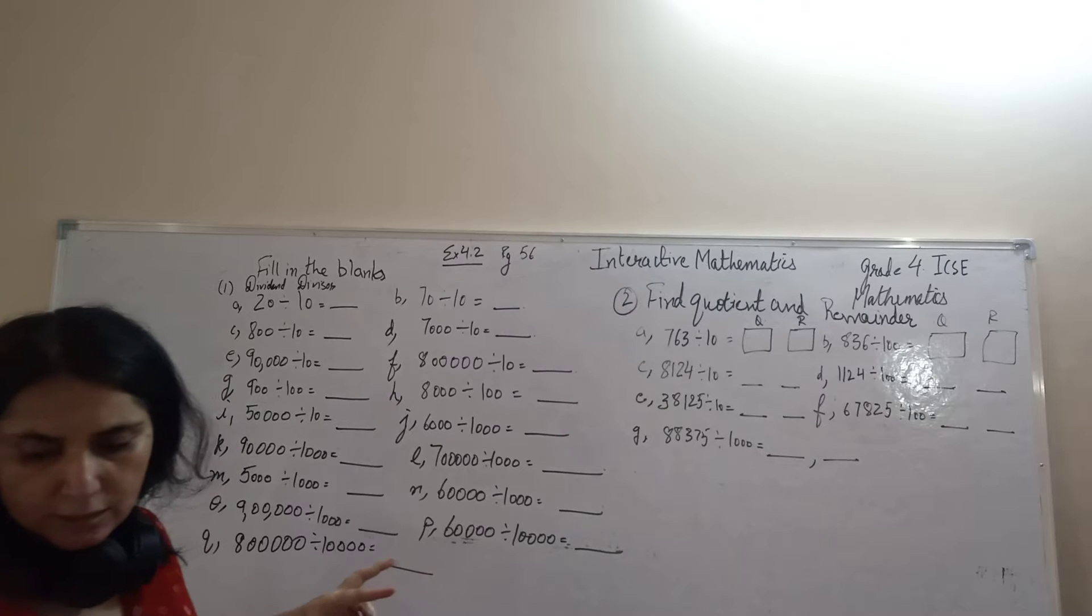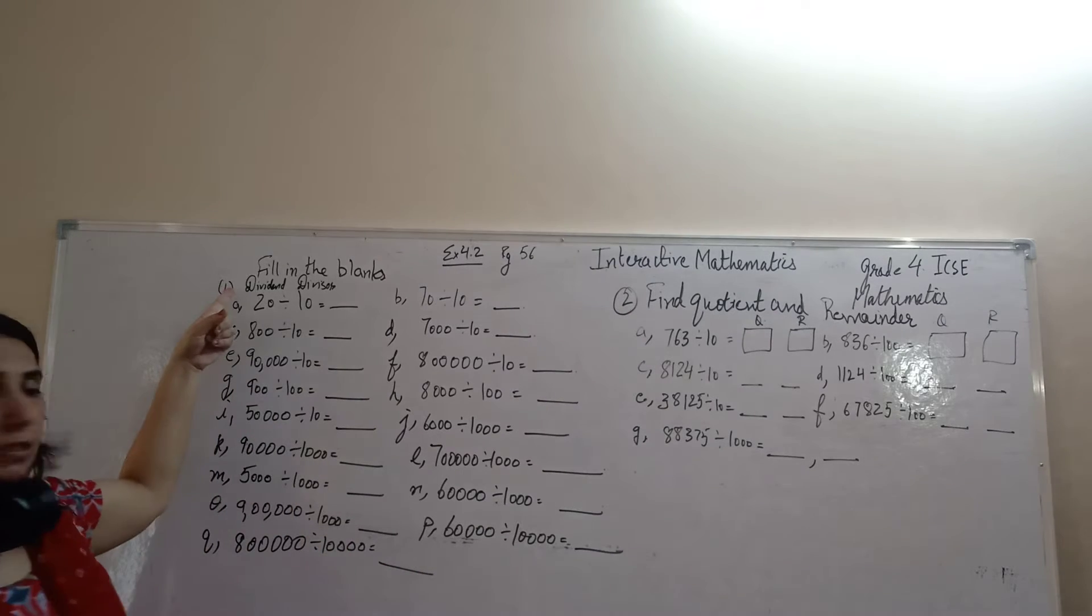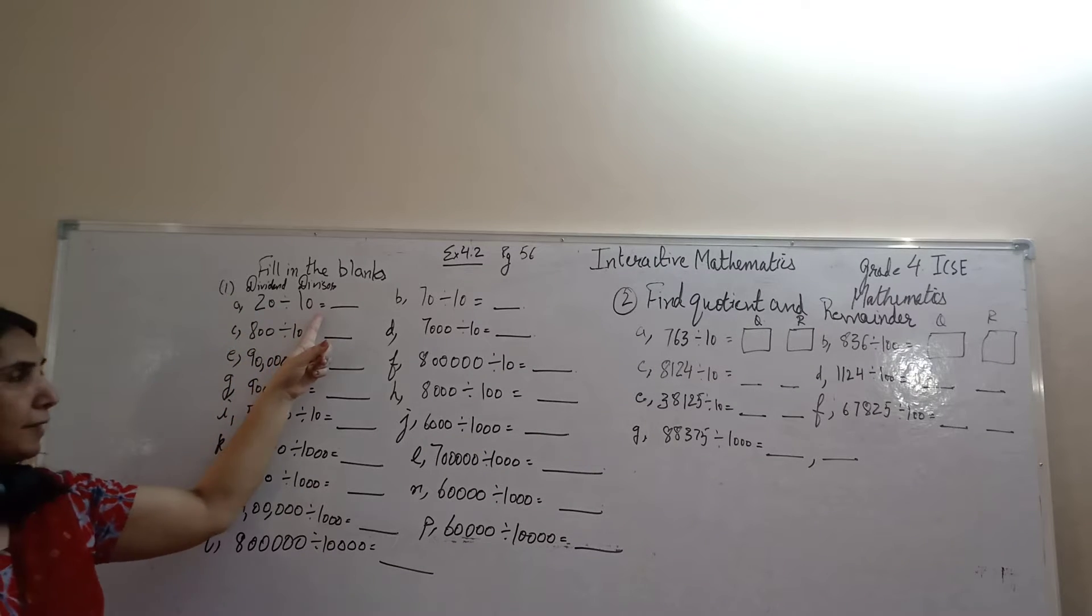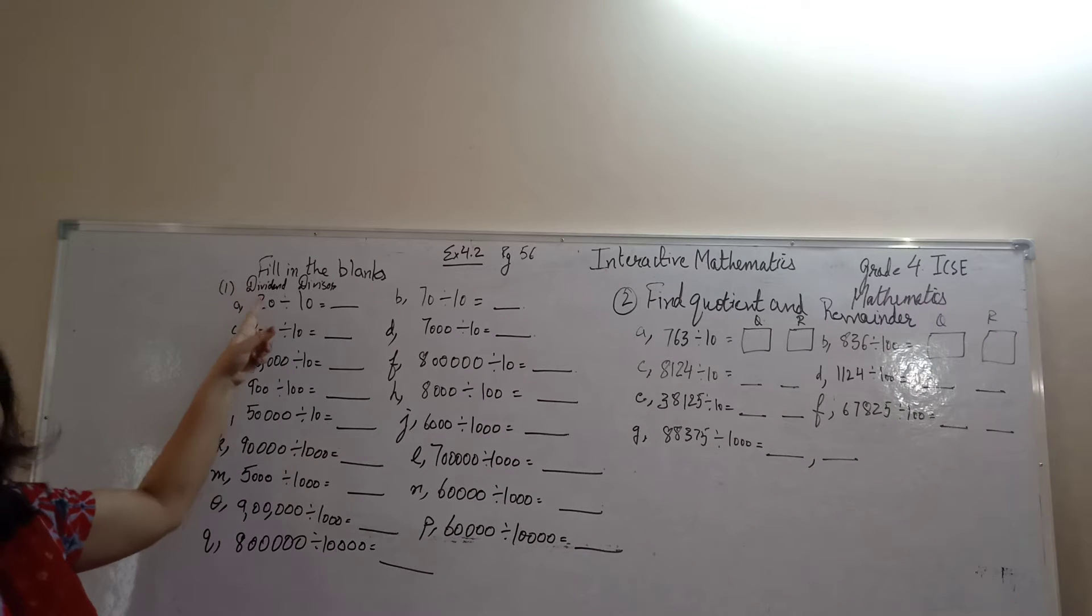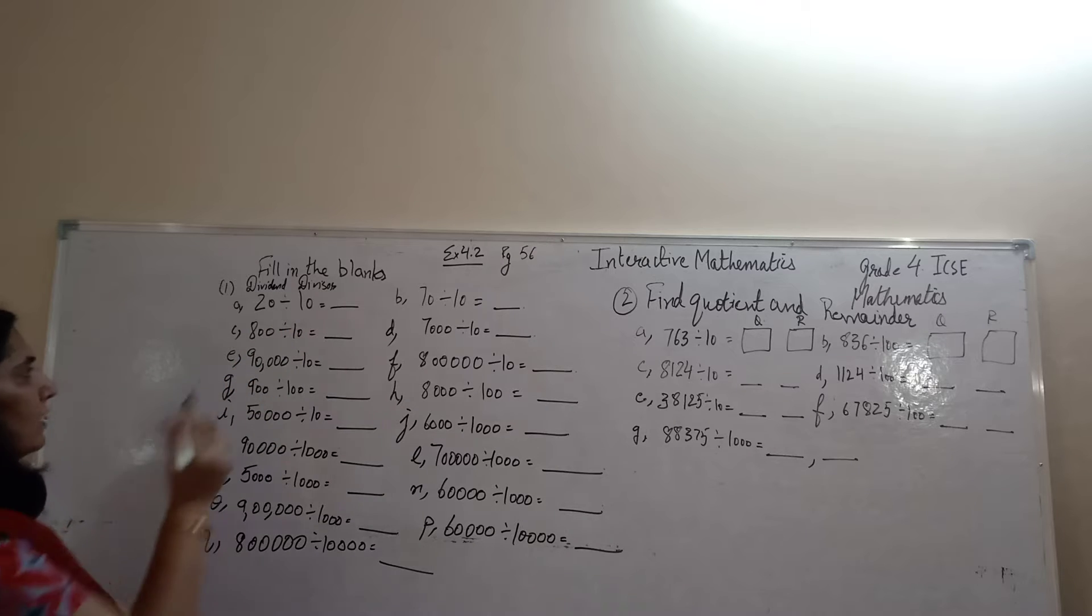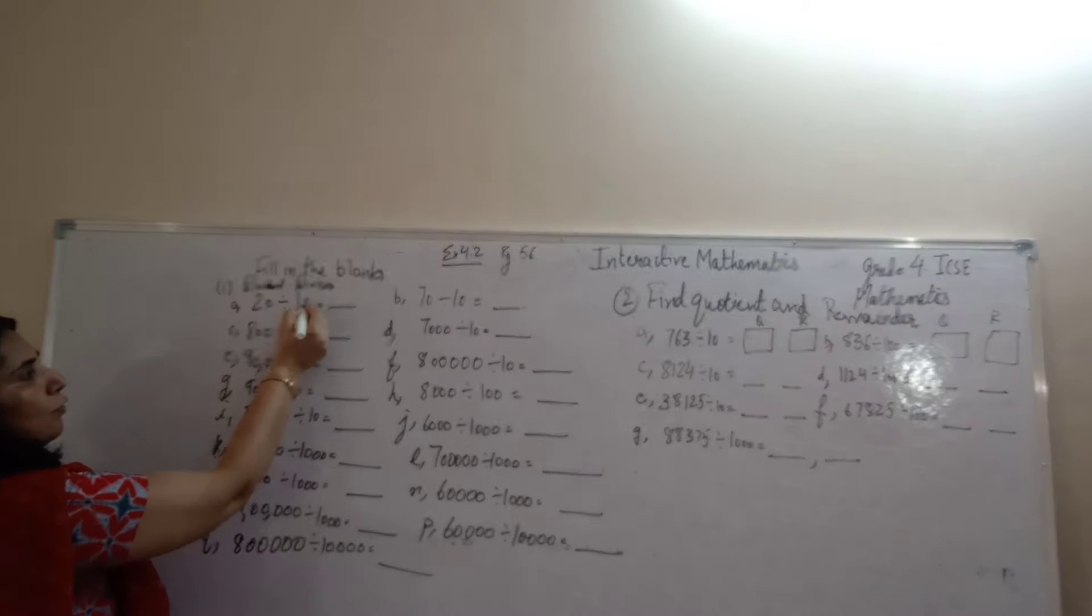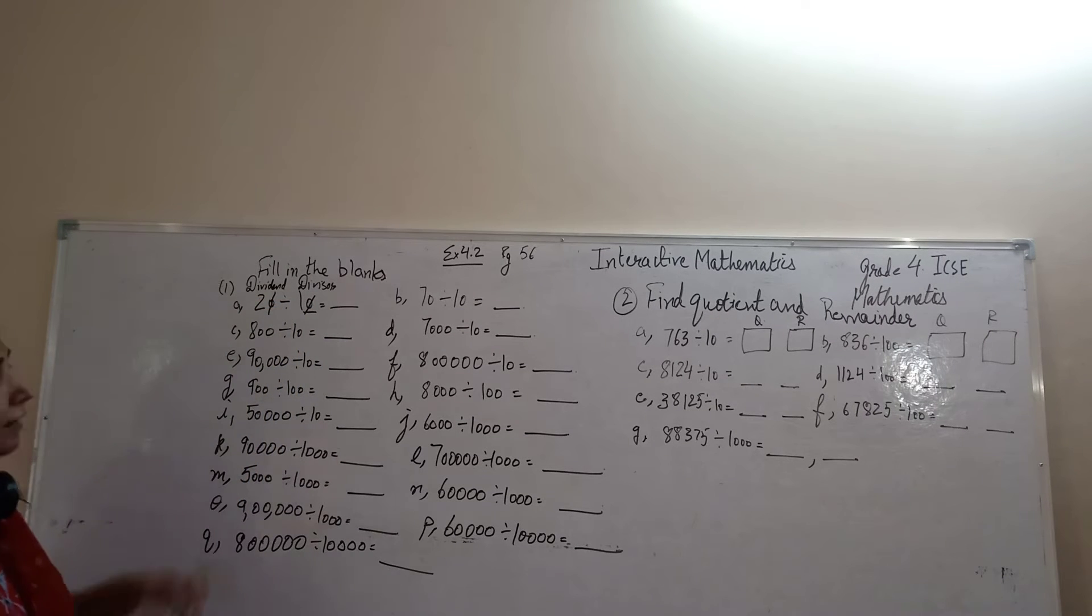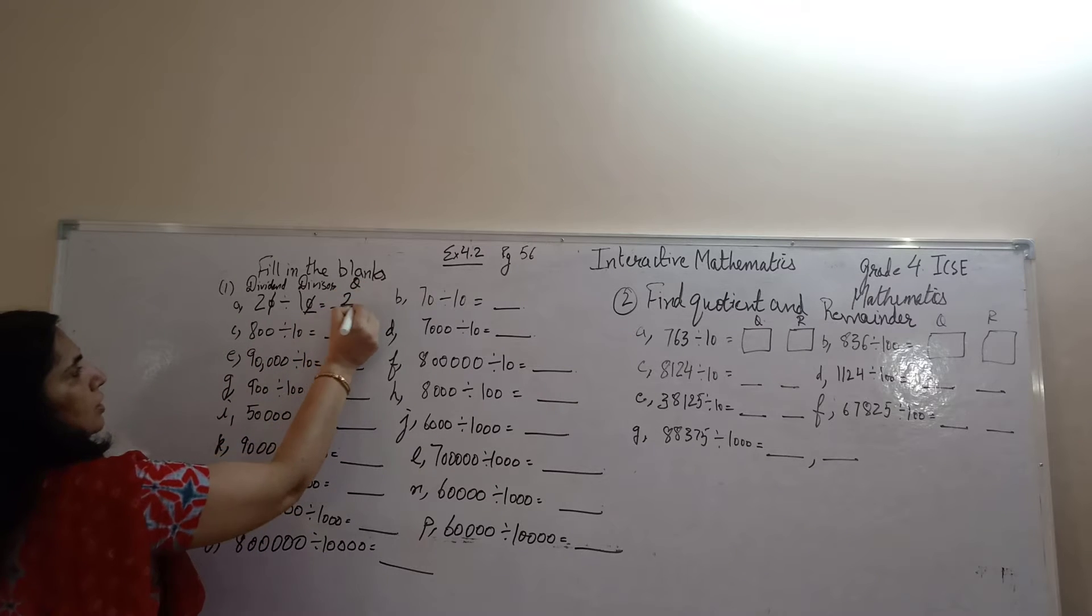When we divide a number by 10, 100 or 1000, let's take example 20 divided by 10. When we divide a number by 10, we remove 10. 10 is having 1 zero. We remove 1 zero from the dividend. And rest, whatever is left is our quotient. 2.